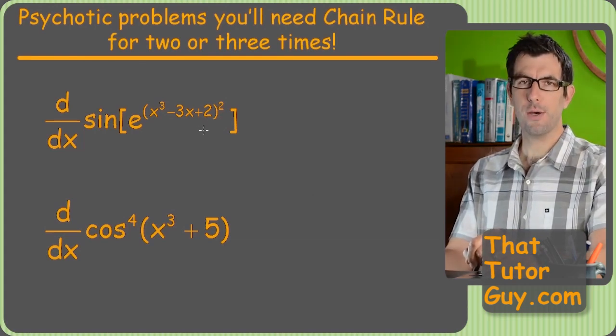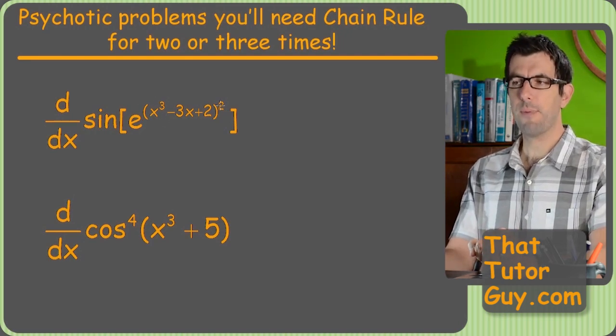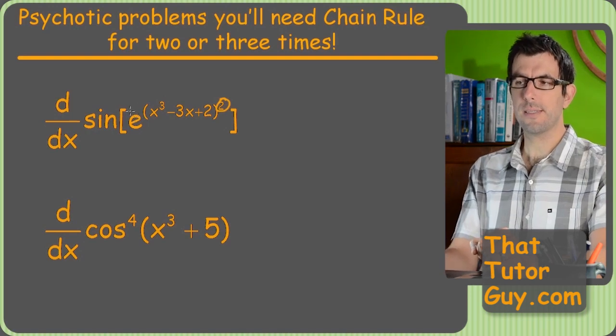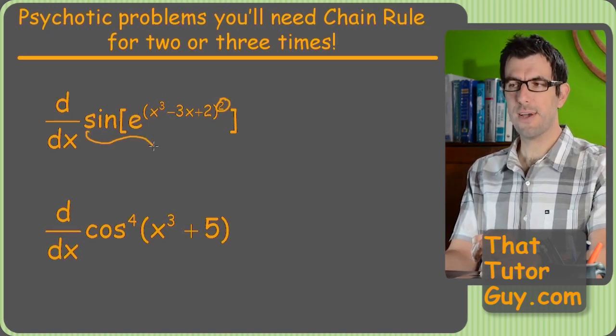All right, and of course, we can even go crazier than we just saw. Here's an exponential with a massive polynomial to a power, which means we, and it's the sine of this, right? So, we're going to, on this particular problem, this is one of those nasty ones I was talking about.